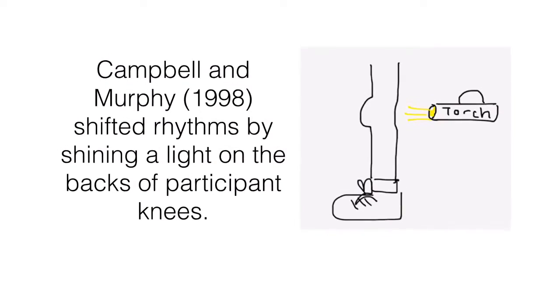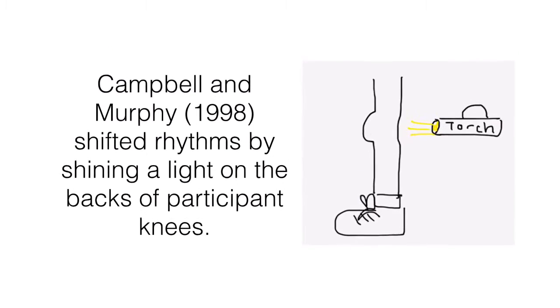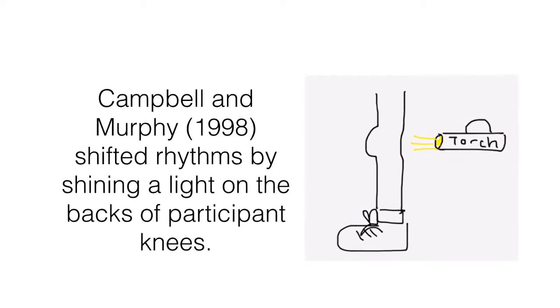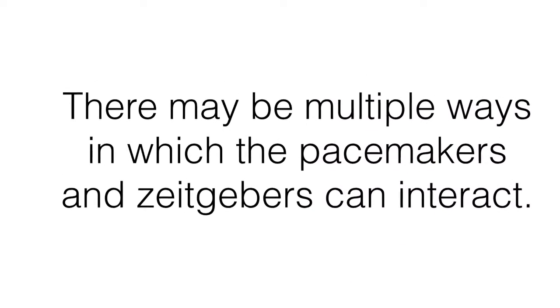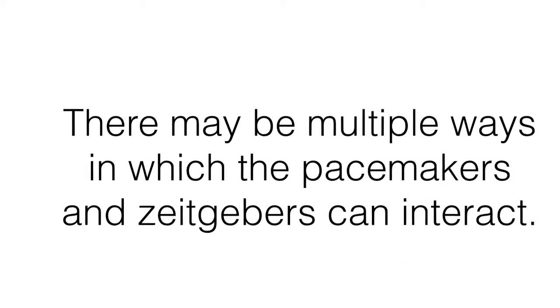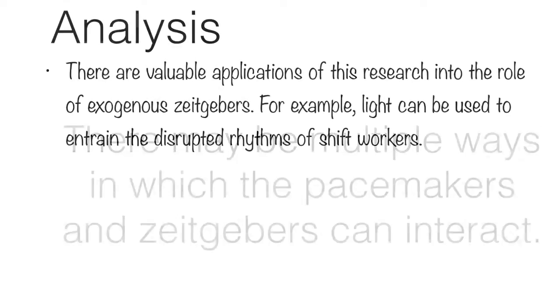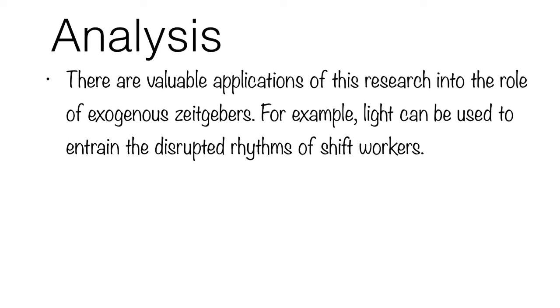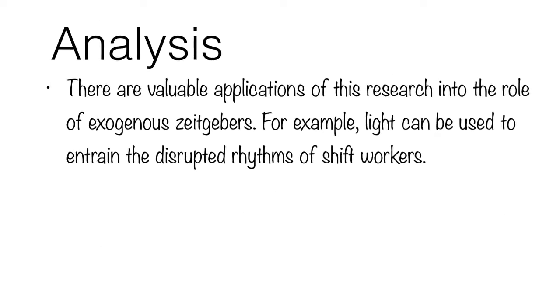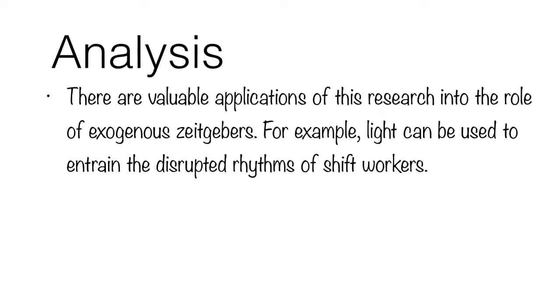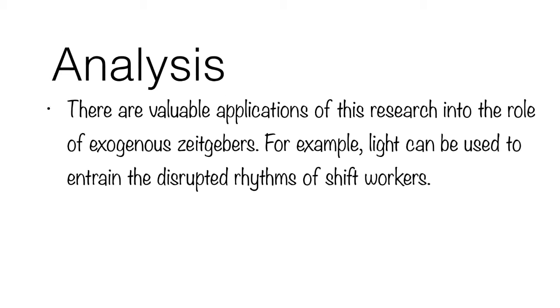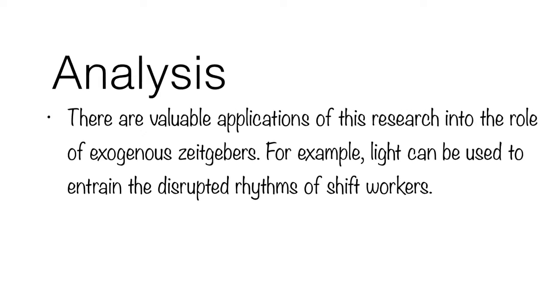Research into the role of light also suggests it may not have to enter the eyes to entrain our internal rhythms. This implies that the way the SCN, and in turn the pineal gland, receive information from the outside world about the light and dark cycles may be more complex than first thought. As evidence suggests that artificial light might also act as a time giver, this has applications for using external cues to entrain rhythms when they're disrupted and disorders associated with desynchronisation.